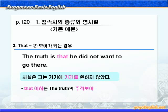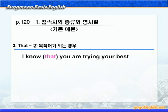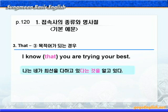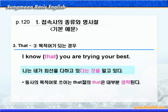다음 3번, 이번에는 that절이 목적어가 되는 경우입니다. 'I know that you are trying your best.' / 'I know you are trying your best.' try one's best가 최선을 다하다 이런 뜻이니까 나는 네가 최선을 다하고 있다는 것을 알고 있다. 여기 종속접속사 that절은 명사절로 타동사 know의 목적어가 되죠. 이 경우 접속사 that은 구어체에서는 보통 생략합니다.